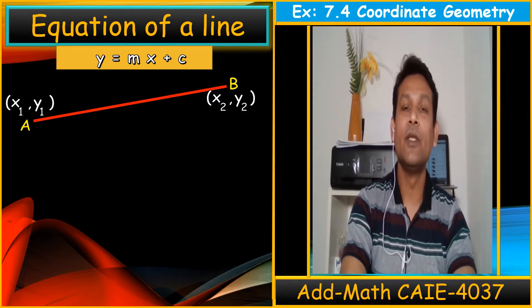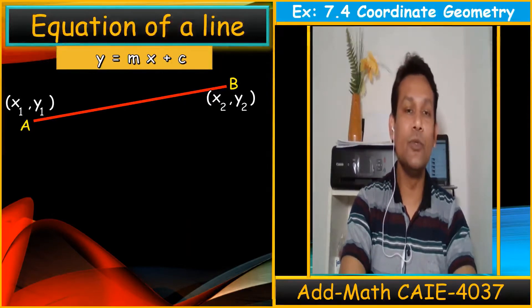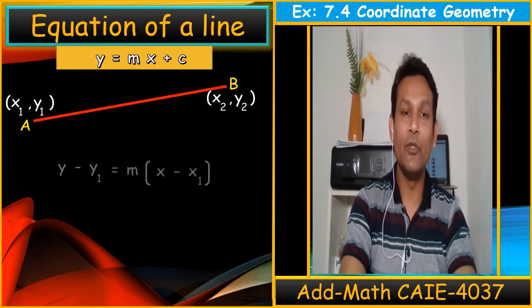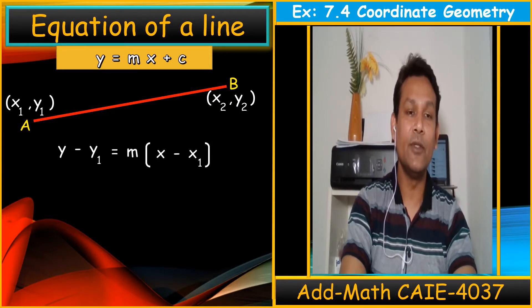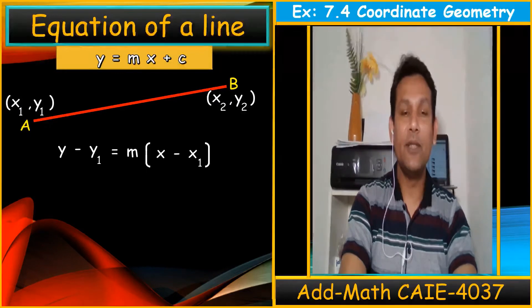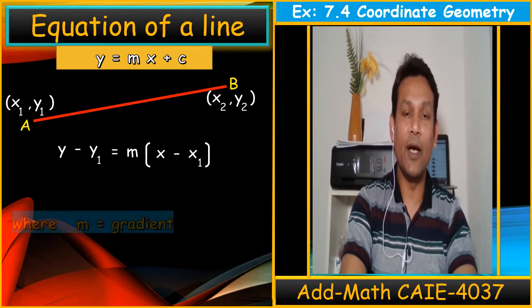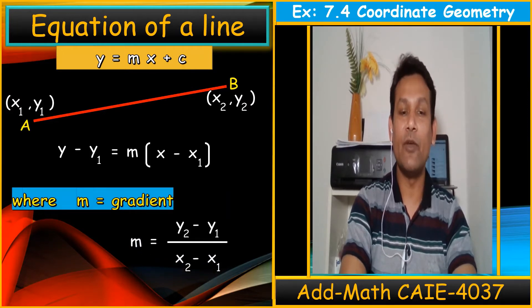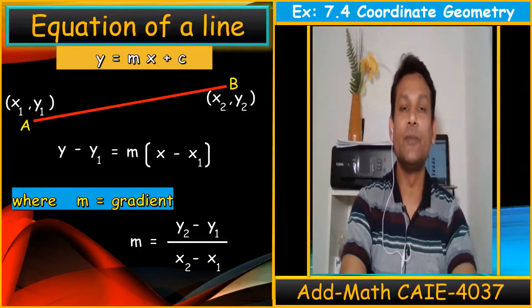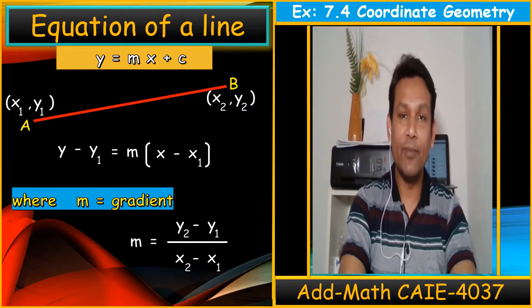But in add-math, we don't use this equation. Normally we use this equation: y minus y1 equals m times x minus x1. This equation is very important in add-math. Here, m is the gradient, and the gradient formula is y2 minus y1 over x2 minus x1.